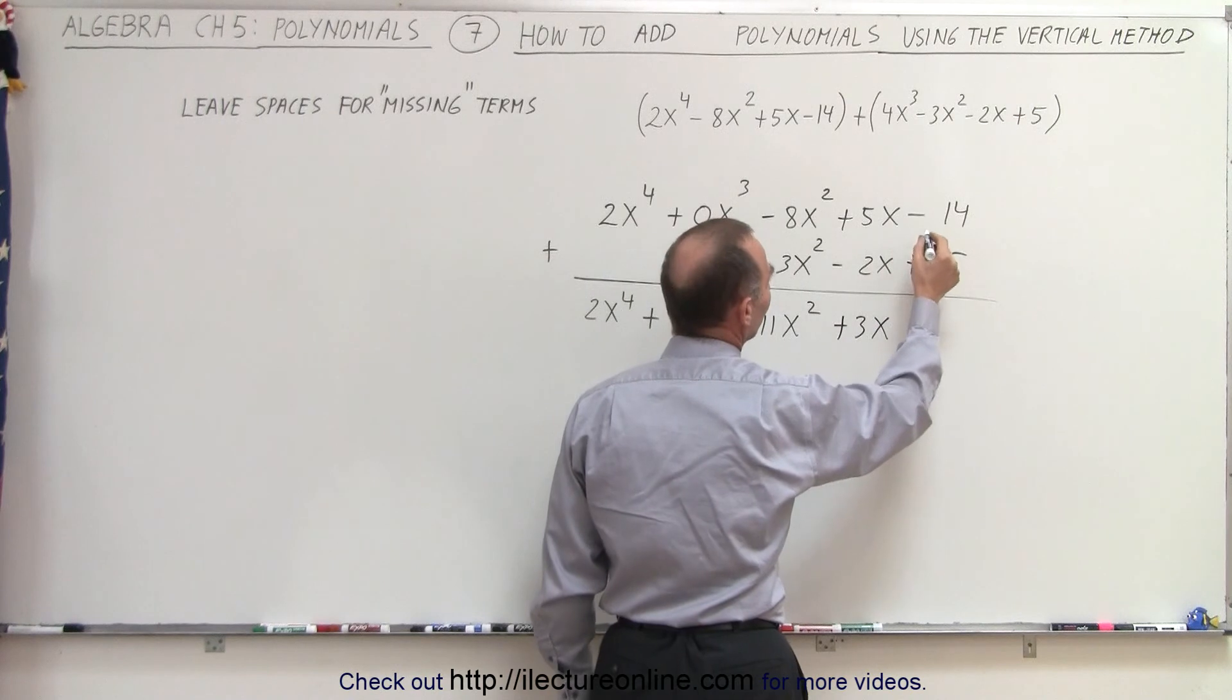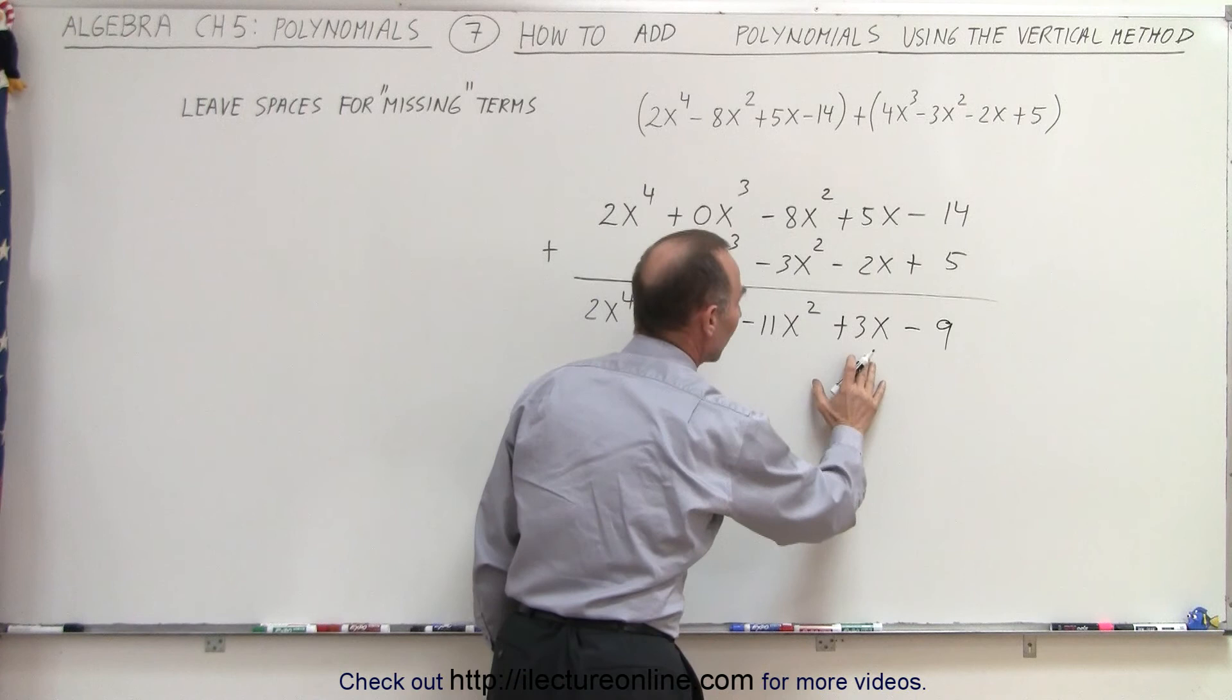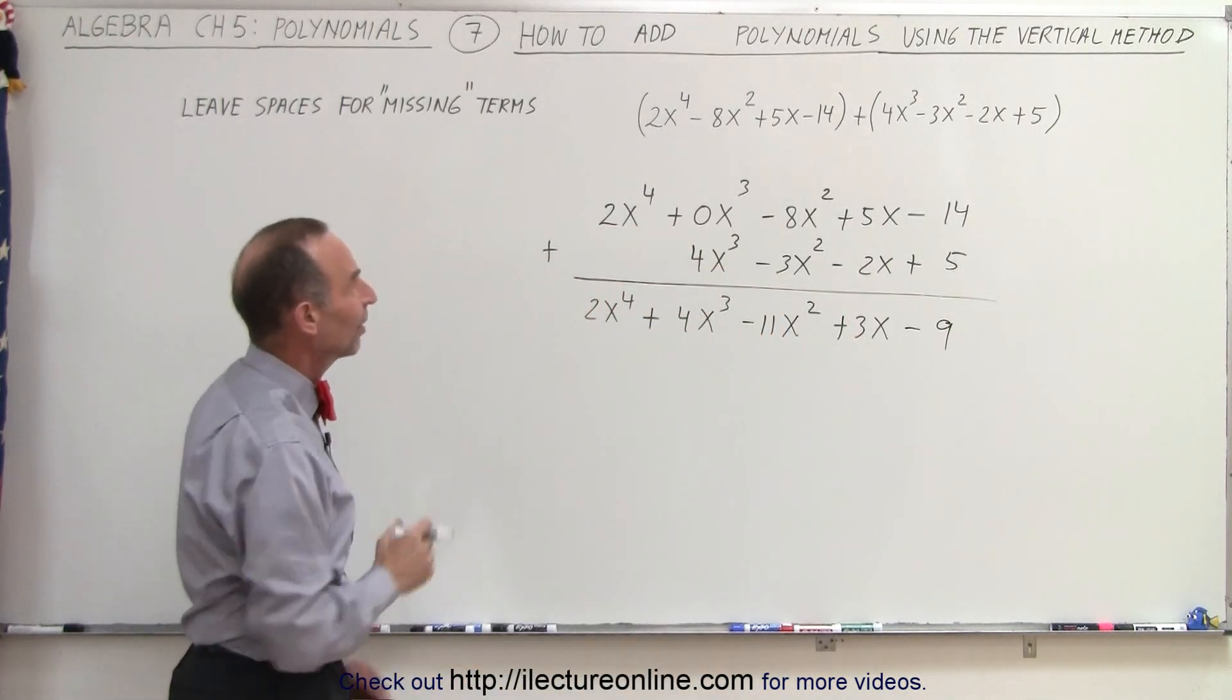And a minus 14 and a plus 5 gives us a minus 9. And notice that this is now an easy result for that addition.